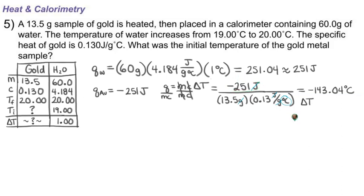Now to figure out T initial, I just need to know that my final temperature minus my initial temperature is equal to my value of Delta T, so that would be equal to negative 143. We don't know our initial temperature so I'll leave in a variable, and then our final temperature is the same as for the water which is 20 degrees Celsius, or 20.00.